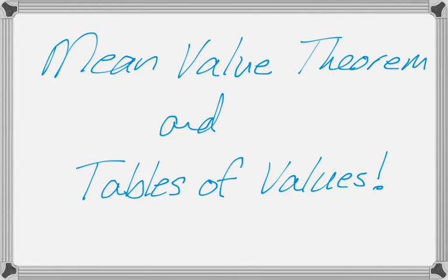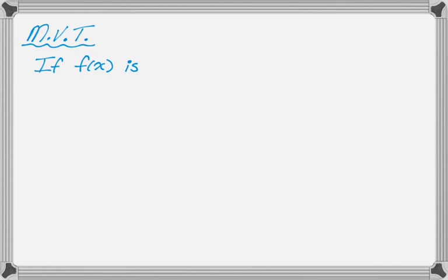So there's a couple things you need to know, the first of which is the Mean Value Theorem. The Mean Value Theorem says if f(x) is—so two requirements—it needs to be continuous on the closed interval from a to b, so that's what the brackets mean, closed interval, so you include a, you include b.